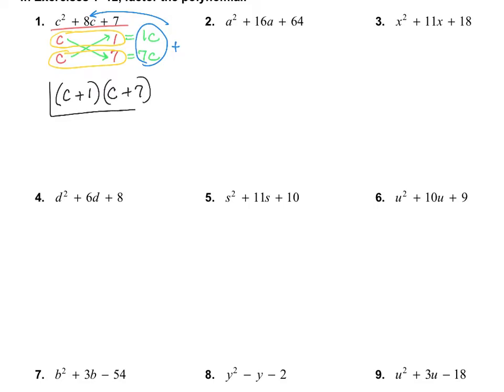The answer is c plus 1 and c plus 7. I can always double check this using the distributive property or the table method. c times c equals c squared; c times 7 is 7c; and then 1c, so 7 plus 1 is 8, giving us the middle term. And 1 times 7 is 7, so it does end up working.